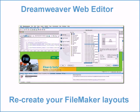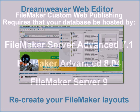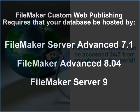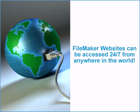The great thing about custom web publishing is that you can display your data on the web however you like. Using a web editor like Dreamweaver allows you to recreate your layouts just like they look in FileMaker, or create an incredible website using amazing graphics and creative tools that are not available in FileMaker. Your FileMaker database needs to be hosted on either FileMaker Server Advanced 7 or 8, or FileMaker Server 9, in order to be accessed via custom web publishing.